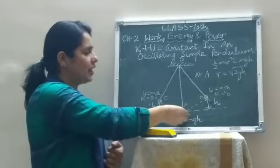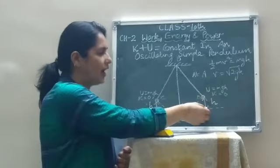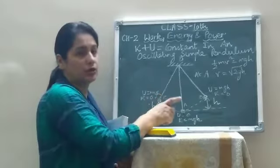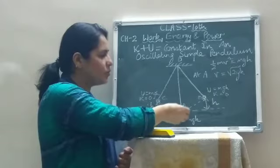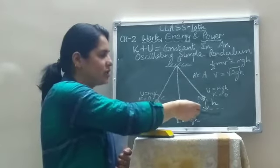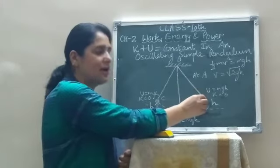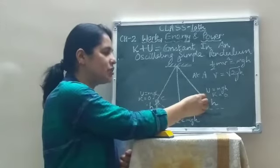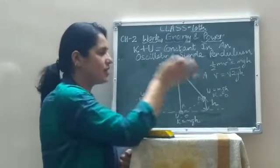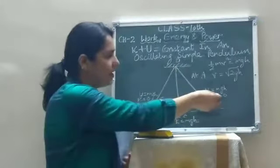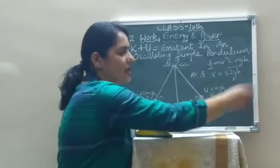When we take the bob from A to B, it gains height. At point B, it has gained a height H from the ground, so it has gained potential energy. As the bob moves from A to B, its kinetic energy decreases and potential energy increases. At point B, potential energy becomes maximum — U = mgH — and kinetic energy becomes zero because the bob has come to a stop. So total energy at B is mgH + 0 = mgH.